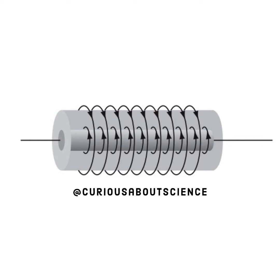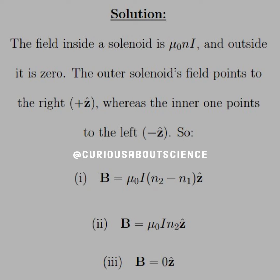Let's look at the diagram. We have two coaxial solenoids with opposite currents. We already know the field of a solenoid is μNI, and we also know that outside the solenoid the field is zero. We can use this result with superposition to add up the respective magnetic fields.